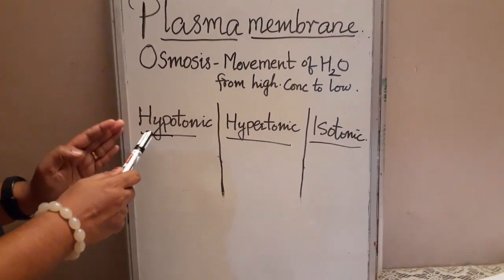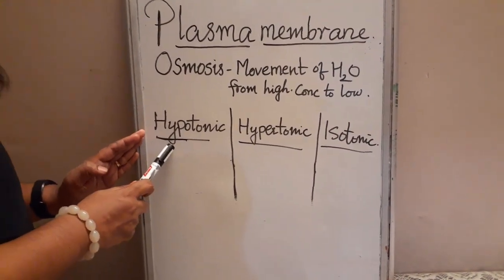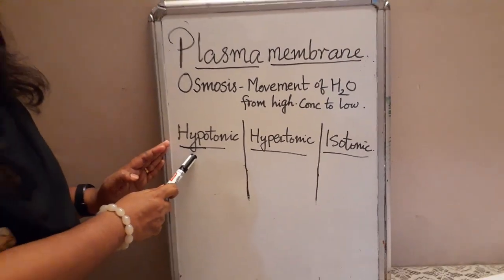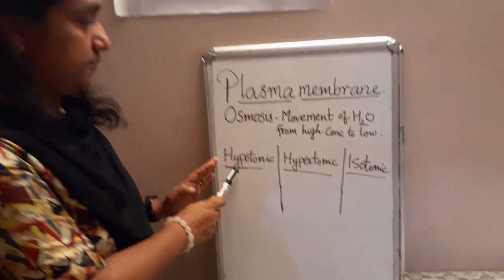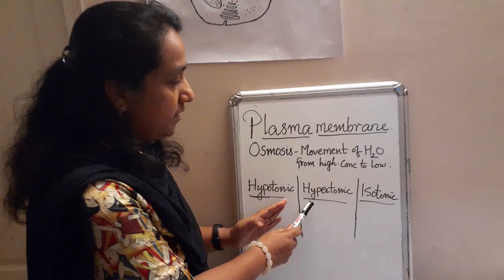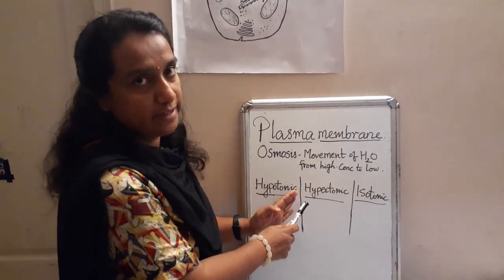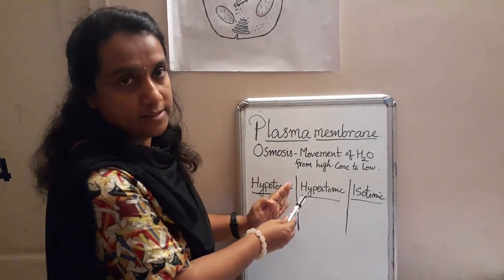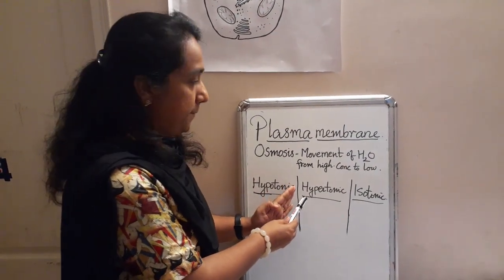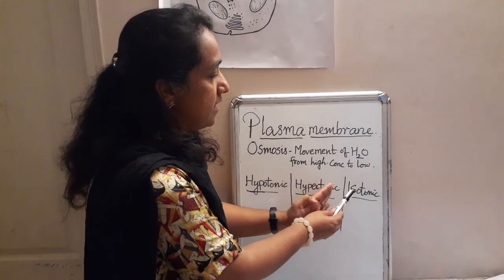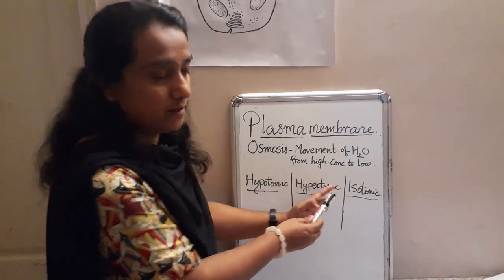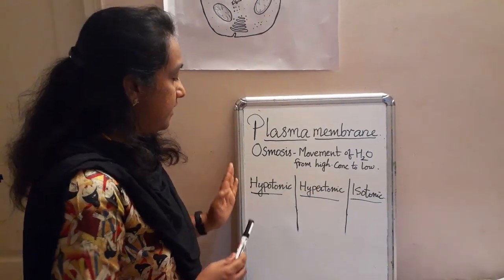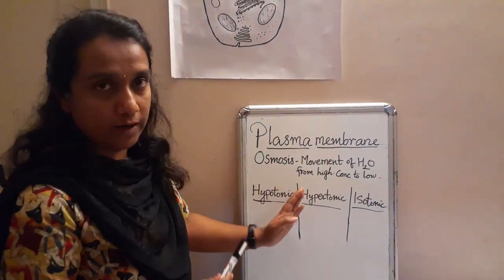Hypo means less concentration of water. Hyper means more concentrated — concentrated water is known as hypertonic. And isotonic is the third type. Let's see them one by one.